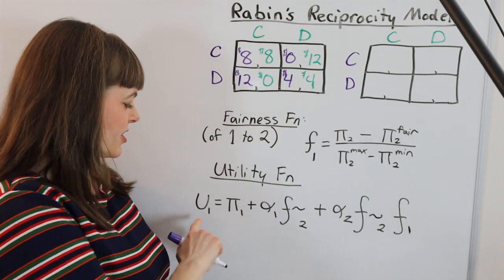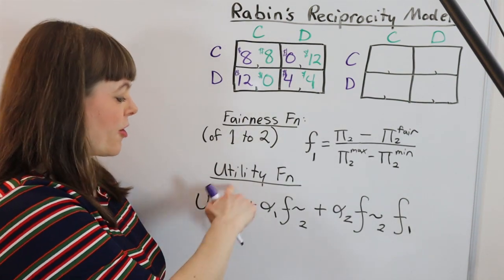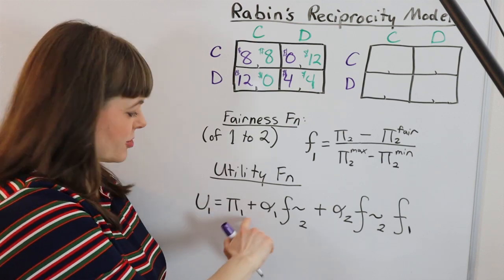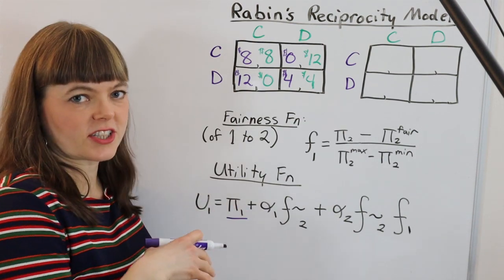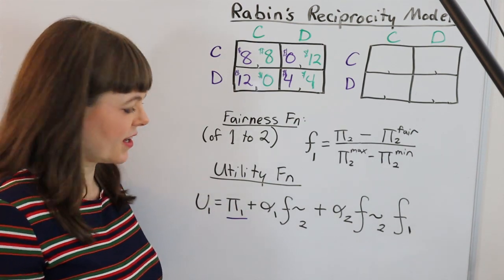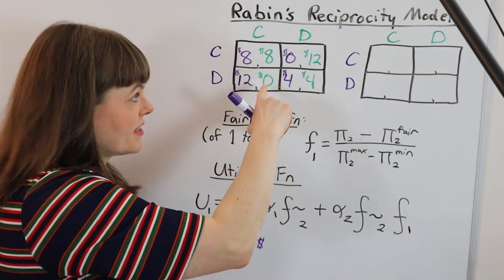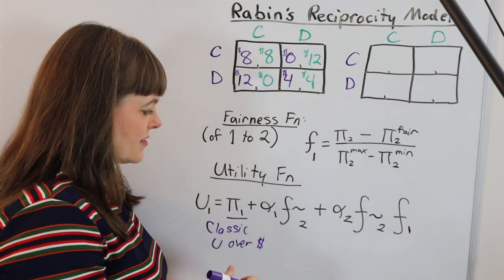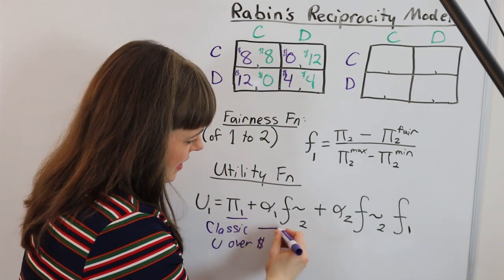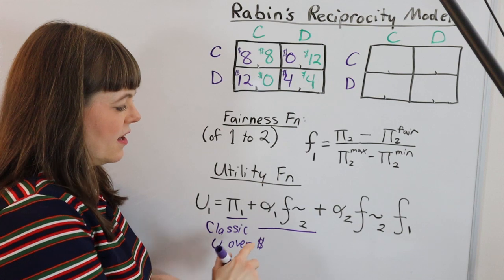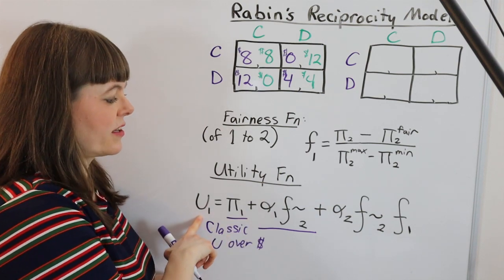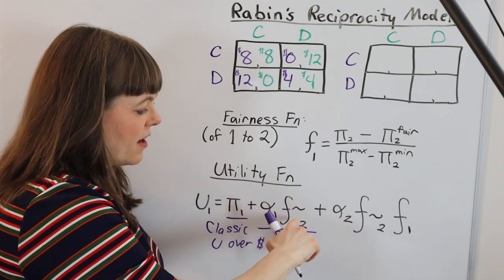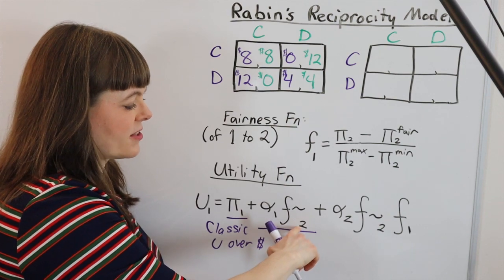Like most utility functions, player one cares about their own payoff. So this first term in the function is actually just classic consumption utility, or in this scenario it's just utility over the direct amount of money that that player gets.